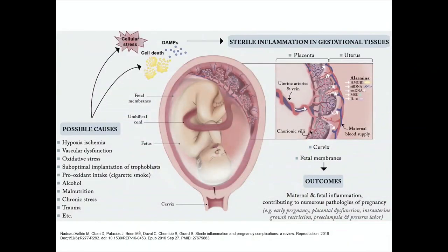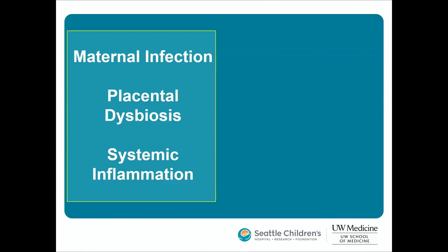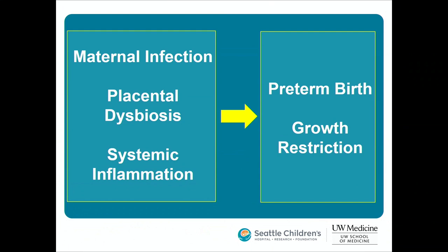One study evaluated gestational tissues such as the placenta and found that sterile inflammation — signs of inflammation without bacteria — was present in relationship to preterm birth, growth restriction, and other adverse outcomes. This suggests inflammation, independent of infection, is also associated with preterm birth.